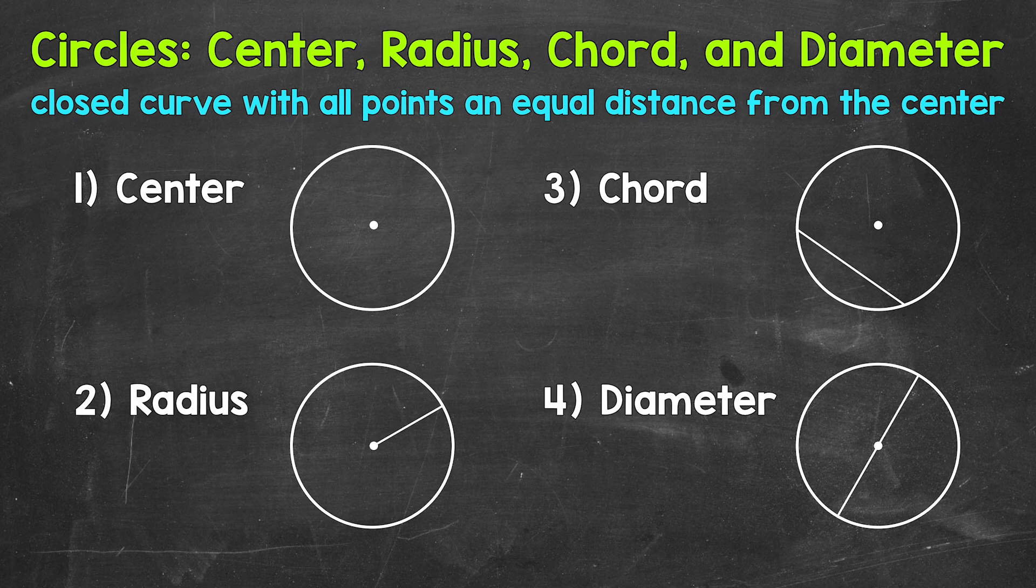Let's jump into our examples, starting with the center of a circle. Simply put, the center of a circle is the middle of a circle. So that is right here. All of the points around the circle will be an equal distance from that center. So any point on the circle is the exact same distance from the center.